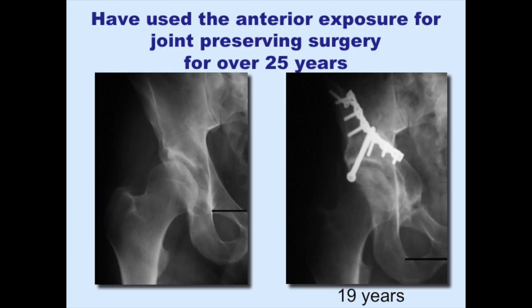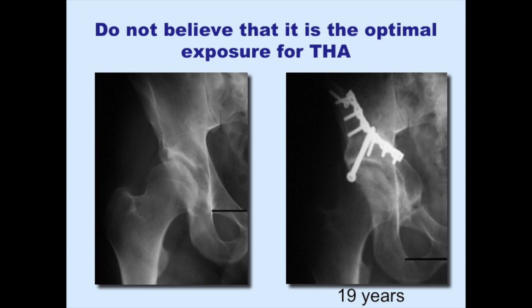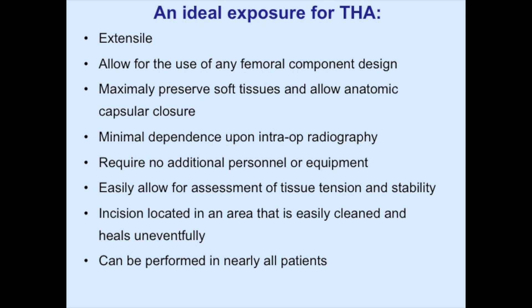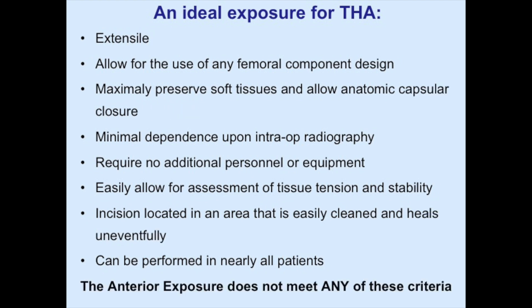I have used the anterior exposure for over 25 years. I really like using it for periacetabular osteotomy and other joint-preserving interventions, but I have never felt it was a very good exposure for total hip arthroplasty, and I still feel that way. An ideal hip replacement design would be an extensile exposure, allow any femoral component design, maximally preserve soft tissues, allow anatomic closure of the hip joint capsule, have minimal dependence on intraoperative radiography and personnel, require no additional equipment, easily allow for intraoperative trial reduction and assessment of tissue tension and stability, place an incision in a clean location easy to heal, and be performable in nearly all patients. The anterior exposure fails to meet any of those criteria.